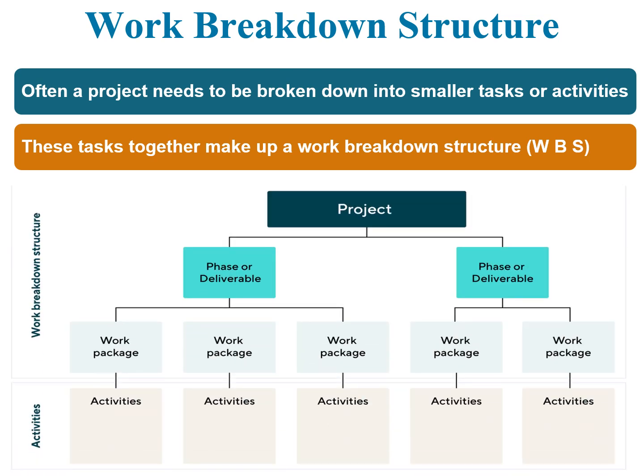This diagram shows a project divided into two phases — also called deliverables. In each phase we have a work package, which is the work breakdown structure unit. For each work package there are activities, so we list down the activities to be done in each work package. Each work package belongs to a phase or deliverable stage, which is part of the total project. We also assign a team or individual to each activity.